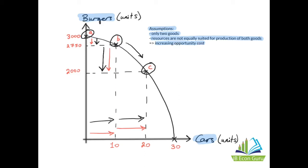This is because as you increase the production of one good, you're not just taking resources from the production of the other good — these resources may actually be more suited for producing the other good. At some point you're taking resources that are better suited for producing burgers and trying to use them to produce cars. So any movement from one point to another represents an increasing opportunity cost.